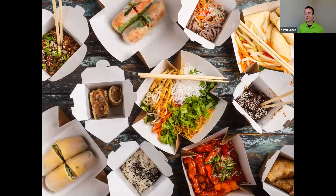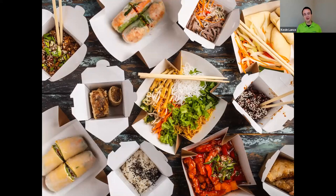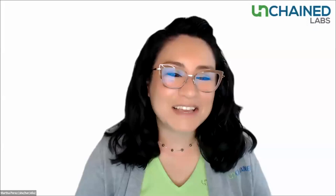Pivoting back to the lunch analogy one last time — just like the first step to speedy takeout is uncovering what's going on inside each package, Stunner can help you get the rapid in-process data you need so you're never surprised about what's inside your sample. Thank you so much, Kevin, for introducing us to Stunner and how it's being used for capsid titer characterization, fast low-volume empty-full ratio, and as a key part of at-line analytics during downstream purification.